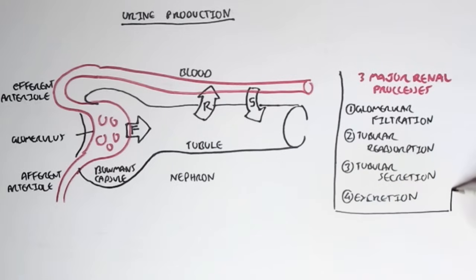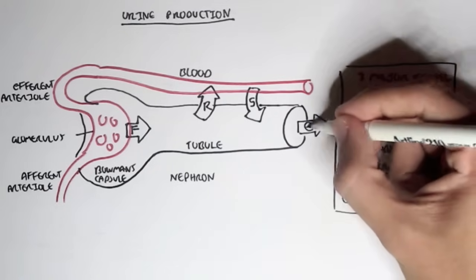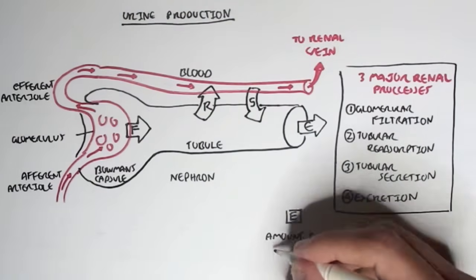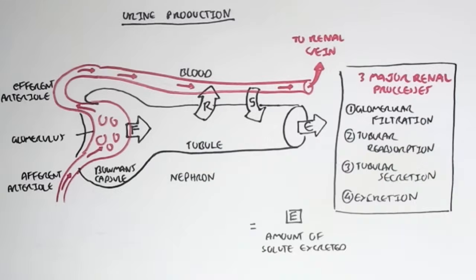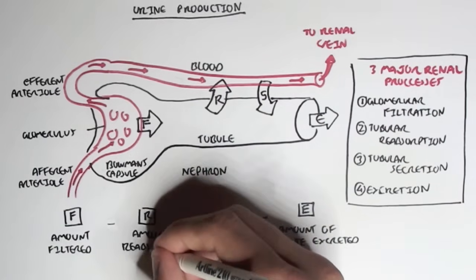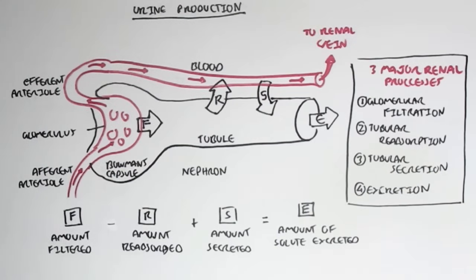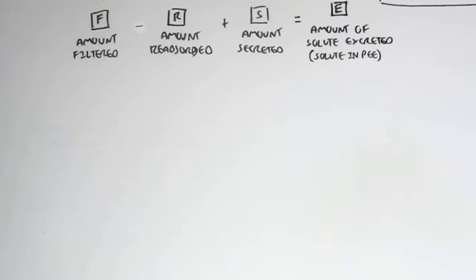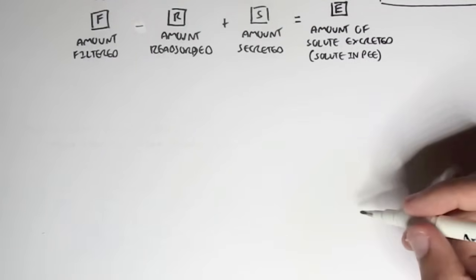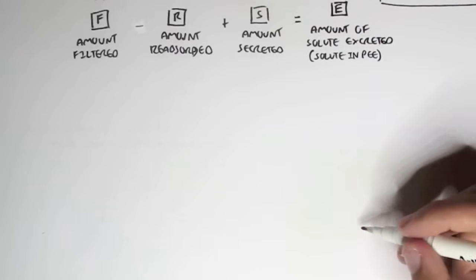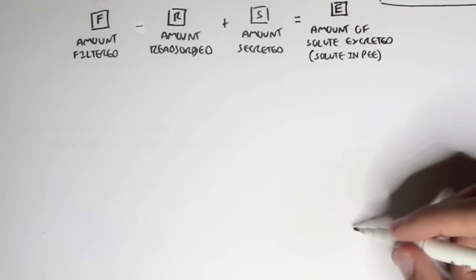So what amount of substances is actually excreted out of the body? To find the amount of solute excreted, we calculate: the amount filtered minus the amount reabsorbed by the body, plus the amount secreted by the body — and this gives us the amount of solute excreted. I hope you learned something from this video. In the next videos we'll look at the three major renal processes, beginning with glomerular filtration, then reabsorption, then secretion. I'll also provide links on this video for one of the functions of the kidneys — regulating fluid volume and blood pressure — by providing a link on the renin-angiotensin-aldosterone system. Thank you.